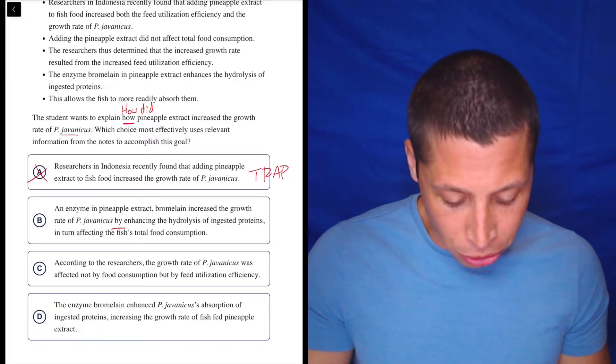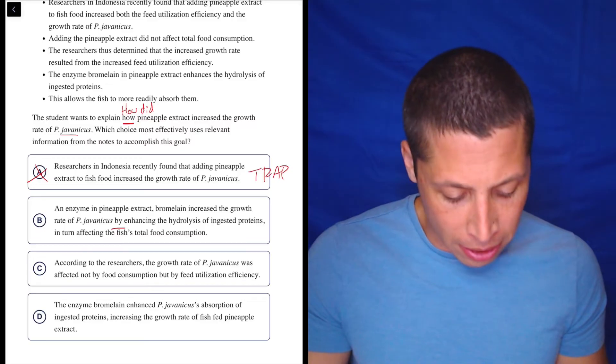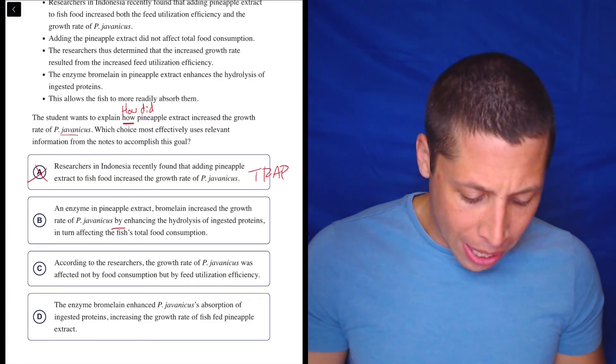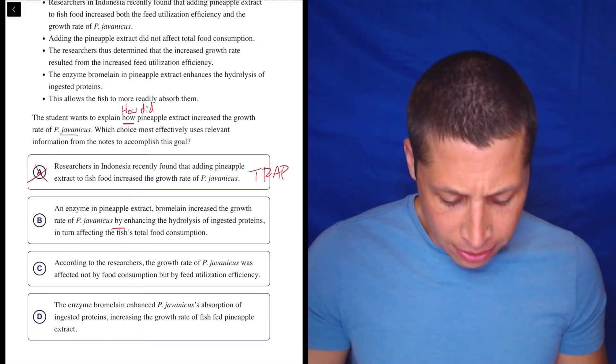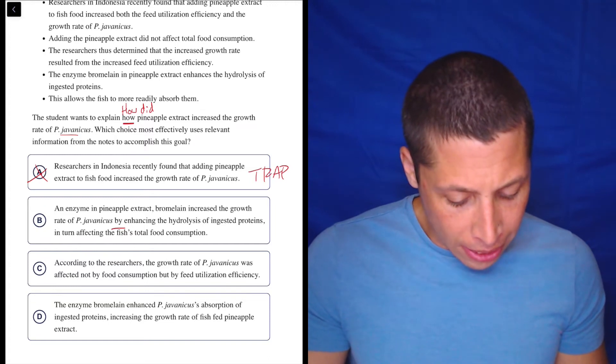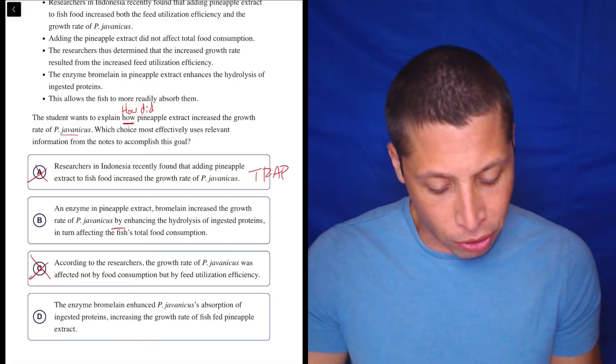C. According to researchers, the growth rate of P. jovenicus was affected not by food consumption, but by feed utilization efficiency. Well, okay, maybe that's kind of giving me a how, but it doesn't seem to be talking about the pineapple extract. So I feel like I need that. This feels like it's missing a much more obvious part of the question. The extract needs to be mentioned.